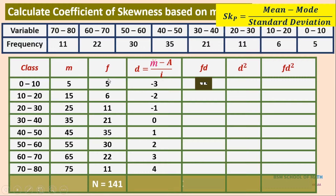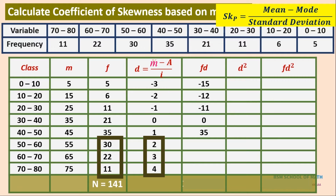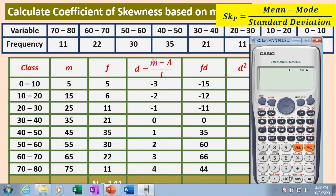For the FD column, we multiply F × D: 5 × (−3) = −15; 6 × (−2) = −12; then −11; then 0. On the positive side: 1 × 35 = 35, then 60. Summing the negative values: −15 − 12 − 11 = −38. Summing the positive values gives 205.